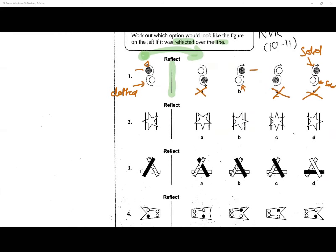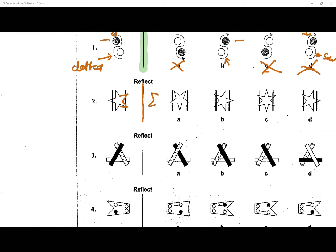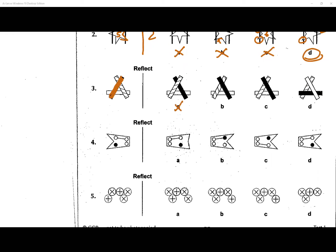Question number two: reflect the star. Close to the mirror line we have two arms of the star above the white line, so there will be two arms on this side also above the black line — going behind is no good. Option C looks good, but our star has five arms and this one has six, so that's no good. It has to be D: two lines on top close to the mirror, and the rest behind the line.